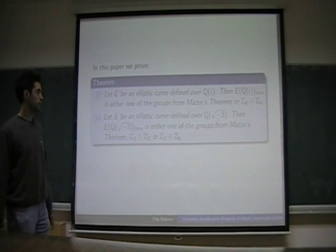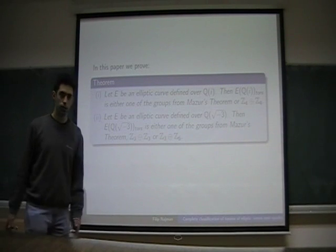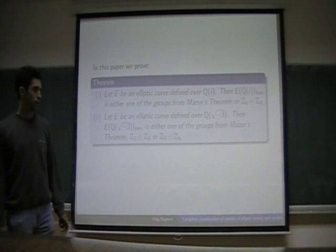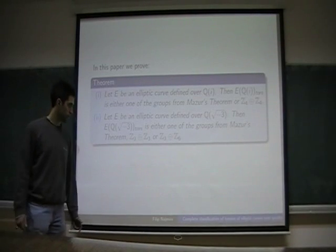Also, if E is an elliptic curve over Q(√-3), then the torsion subgroup is either one of the groups from Mazur's theorem, Z/3Z plus Z/3Z, or Z/3Z plus Z/6Z.